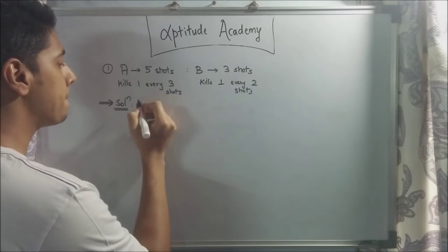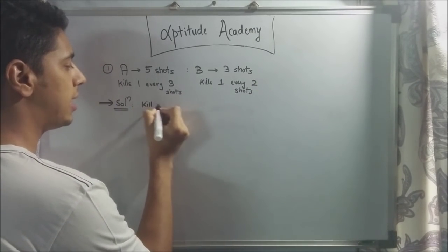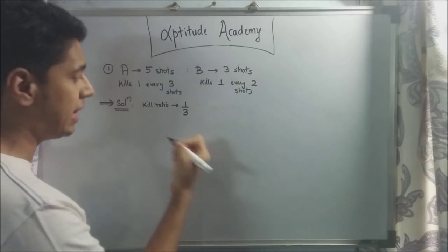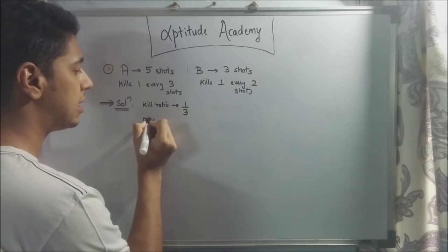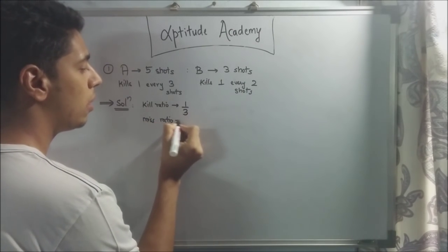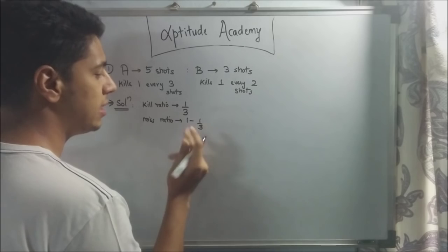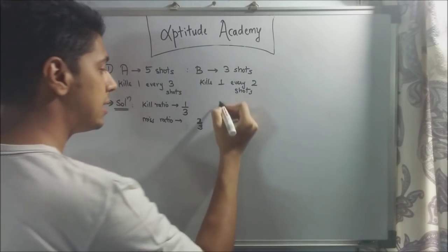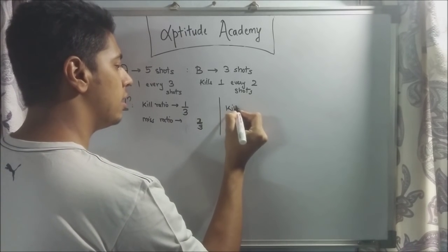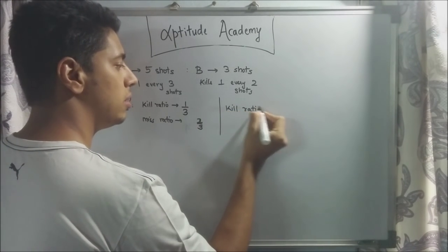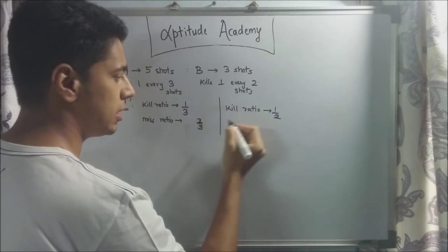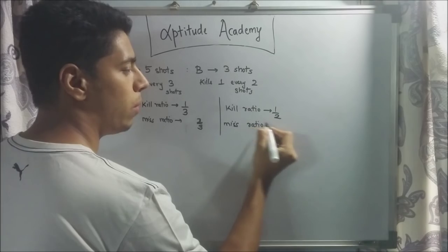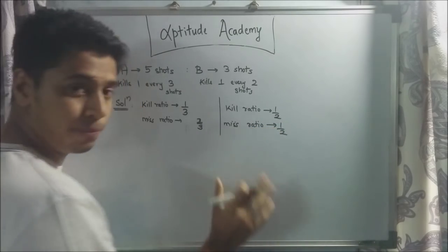The killing ratio for A will be 1 every 3 shots, so 1/3 of the time he will kill. His missing ratio will be 1 minus 1/3, that is 2/3. Similarly, for B, the kill ratio will be 1/2, and the miss ratio will be 1 minus 1/2, that is 1/2 itself.